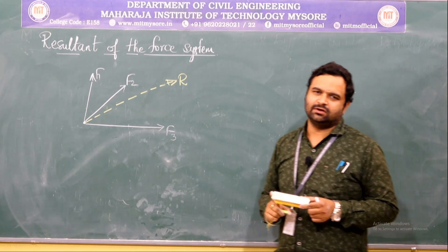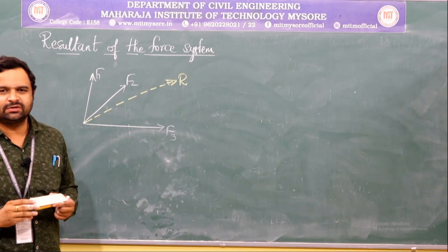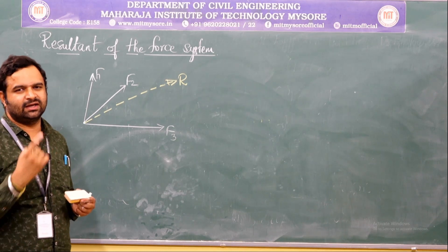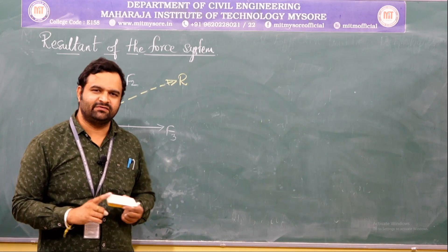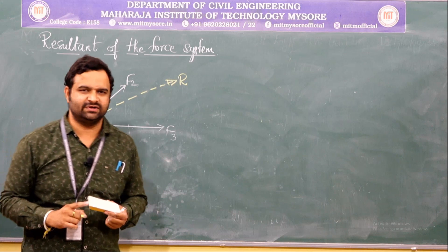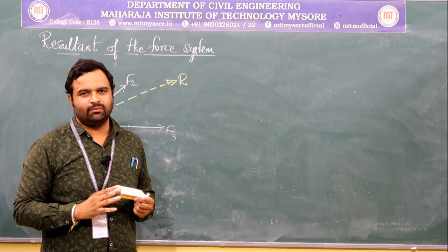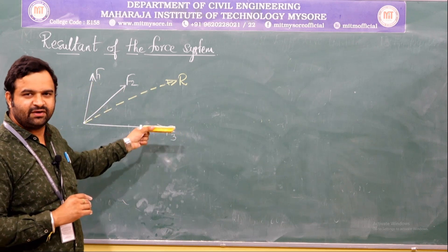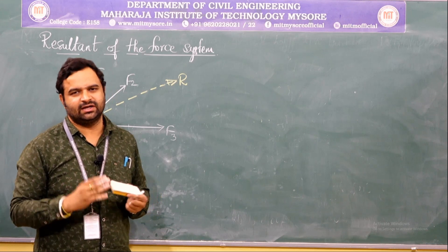This is the definition of resultant. Whenever you consider a force system acting on a body, a number of forces can be replaced by a single force. That single force is called the resultant of the force system, and it will have the same effect as that of the forces F1, F2, and F3. We need to replace these forces F1, F2, F3 by a force R, which is called the resultant of the force system.